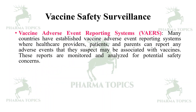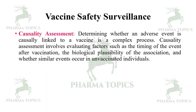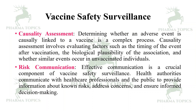Many countries have established Vaccine Adverse Event Reporting Systems (VAERS) where healthcare providers, patients, and parents can report any adverse events they suspect may be associated with vaccines. These reports are monitored and analyzed for potential safety concerns. Safety signals — potential links between a vaccine and an adverse event — are identified through analysis of reported adverse events and data mining techniques. Once a signal is detected, further investigation is conducted to determine causality, evaluating factors such as timing after vaccination, biological plausibility, and whether similar events occur in unvaccinated individuals.